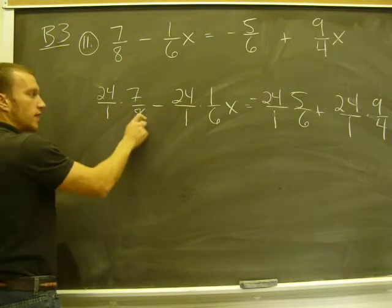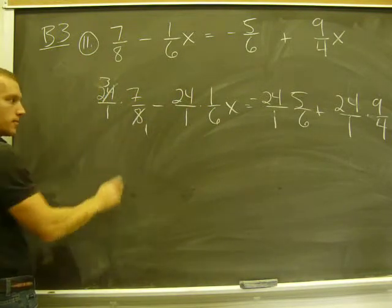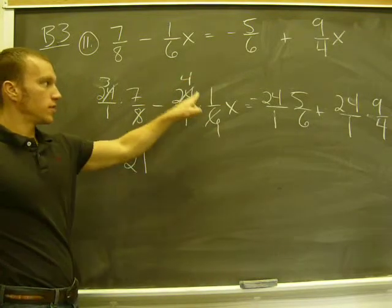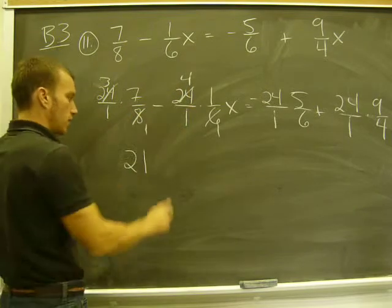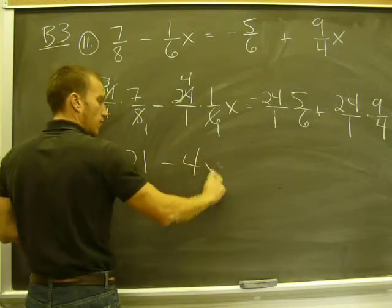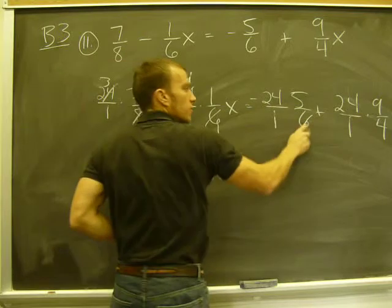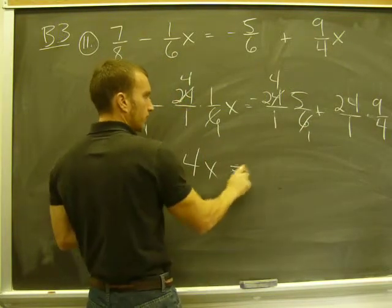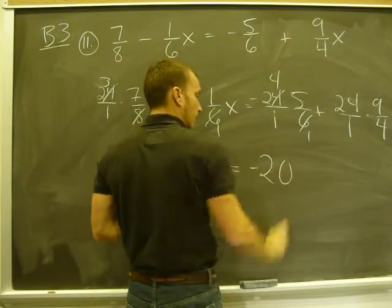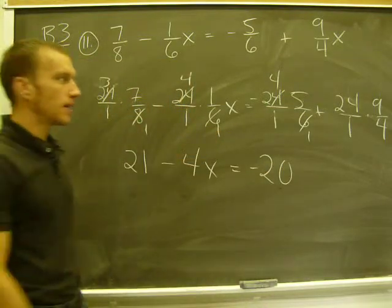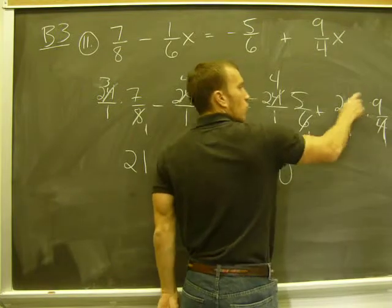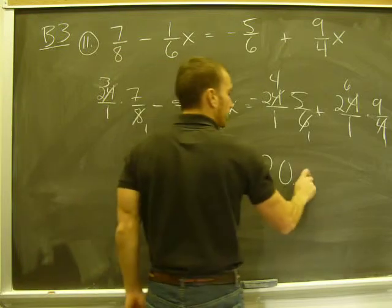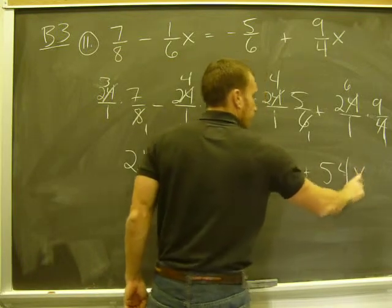So to cancel, 8 goes into 8 once, and into 24 three times. Over here, 6 goes into 6 once, and into 24 four times. 4 goes into 4 once, and into 24 six times. Negative 4 times 5 is negative 20. And then my last multiplication part, 24 divided by 4 is 6. So I'm going to get 6 times 9, and I'm going to get 54.